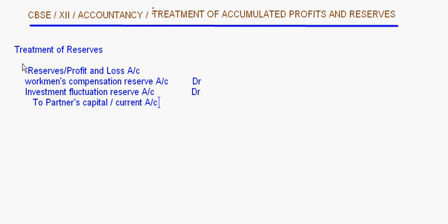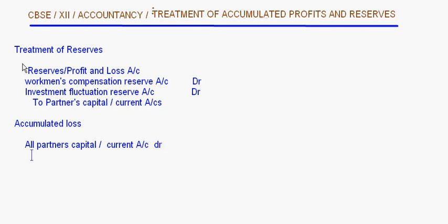The credit goes to partners' capital or current accounts. If there is an accumulated loss instead of profit, the journal entry is reversed: all partners' capital or current accounts are debited to the profit and loss account.